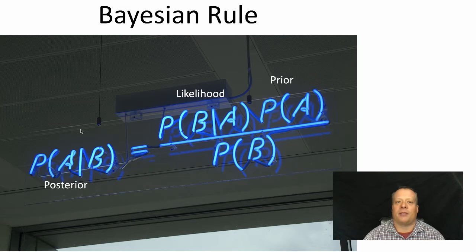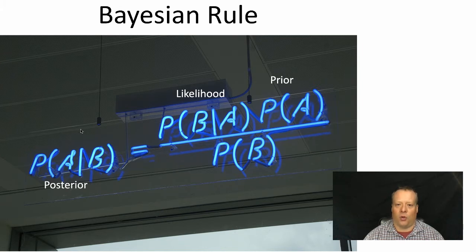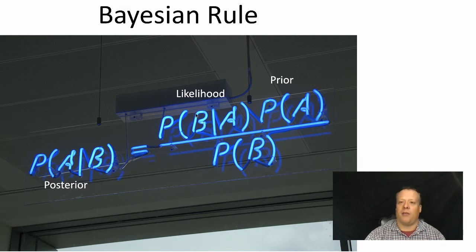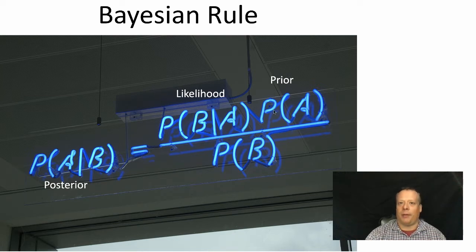Today we're going to be talking about the naive Bayes classifier. Before we get into that, we should talk about what the Bayesian rule is, because that's what the naive Bayes classifier is based around. The Bayesian rule is simply the fact that the probability of seeing any event A given event B is the same as the probability of B given A times the probability of A divided by the probability of B.